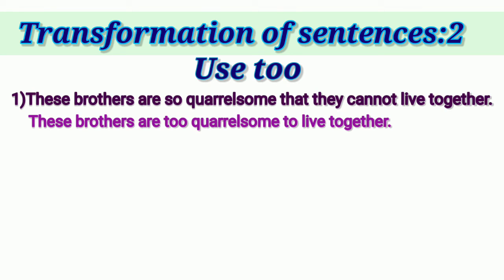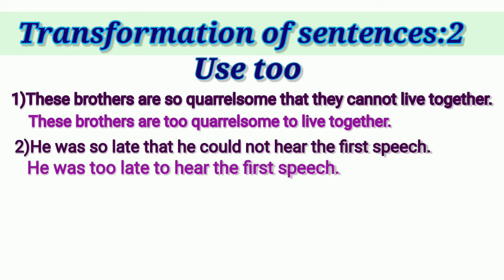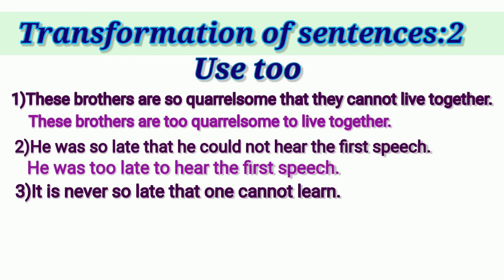Next sentence: 'He was so late that he could not hear the first speech.' TOO² replaces 'so,' and TO² replaces 'that he could not.' Answer: 'He was too late to hear the first speech.' Next: 'It is never so late that one cannot learn.' You will notice 'one' is used in place of the subject, so it is common for all. The answer is: 'It is never too late to learn.'